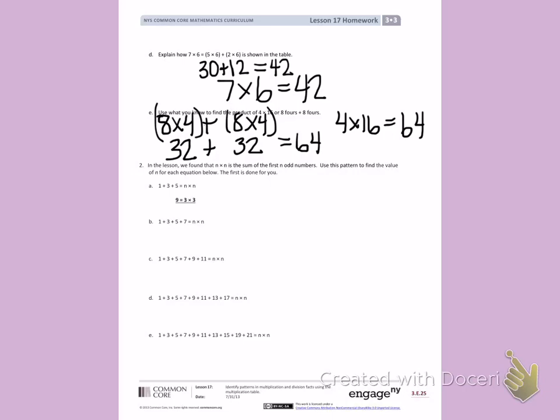On letter B, I have 1 plus 3 plus 5 plus 7. 1 plus 3 is 4. 4 plus 5 is 9. 5 plus 7. Let's add that together in our heads. 9, 10, 11, 12, 13, 14, 15, 16. That is 16.